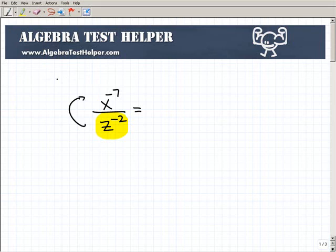Z to the negative 2, I'll move that up into the numerator, and x to the negative 7th, I'll move down to the denominator. Basically they have to switch sides. So this equals z squared over x to the 7th.